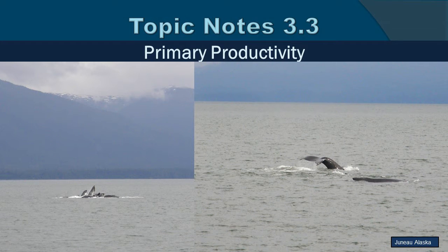Topic notes 3.3, primary productivity. This is a picture from Juneau, Alaska, and I got the chance to see humpback whales doing what they call bubble net feeding, which is where they make a circle of bubbles that sort of encloses their prey, which is mostly zooplankton, like shrimps and little fish and things like that. And then they take turns coming up in the middle to gulp them down. It's really cool to see.